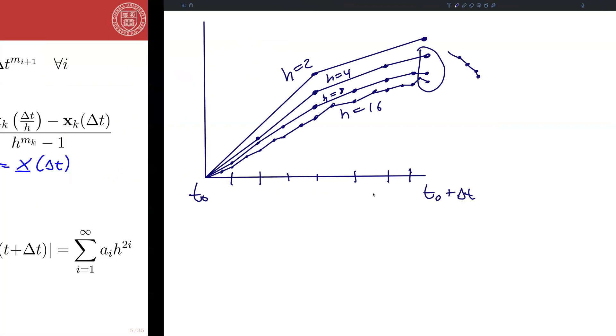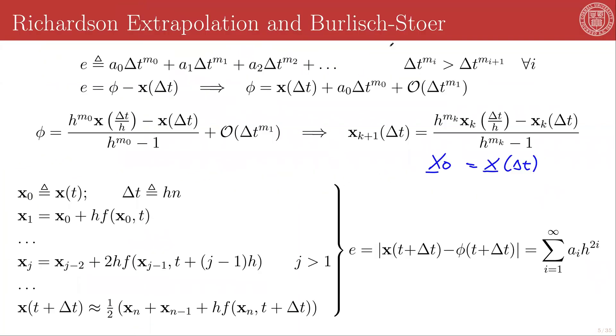So based on this concept, we establish what is known as a Bulirsch-Stoer method. The basic idea here is that we are fitting multiple flows with different Δt's and extrapolating to Δt=0 with what is known as rational function extrapolation.